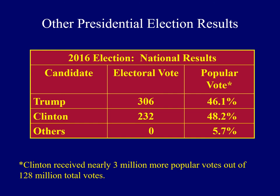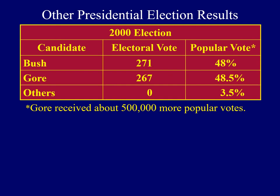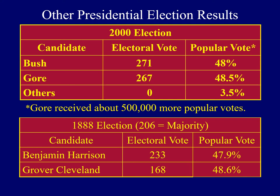In 2016, President Trump won the presidency with 306 electoral votes to Hillary Clinton's 232. However, the popular vote was different — Clinton actually received 3 million more popular votes than President Trump did. This is rare but has happened at other times in American history. In the year 2000, Al Gore received about half a million more popular votes than George W. Bush, yet Bush clearly won a majority of the electoral vote. This also happened in 1888 — a majority of electoral votes was 206, Benjamin Harrison clearly won with 233, yet Grover Cleveland won the popular vote.